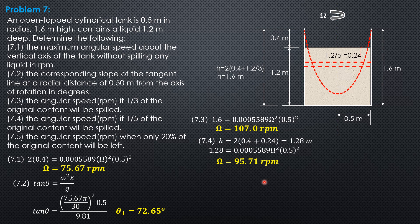Then finally, the angular speed when only 20% of the original content will be left. So that means we expect that the paraboloid, imaginary paraboloid of revolutions will be extending beyond the tank. And therefore, we cannot use anymore the same concept as before. So let's analyze this. So that means this is 0.2 of 1.2, so 0.24 meter.